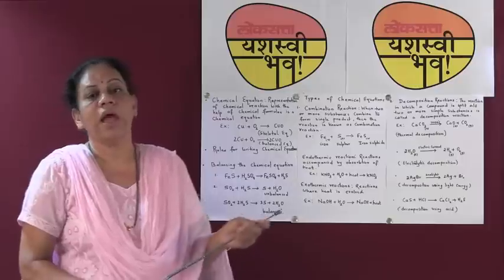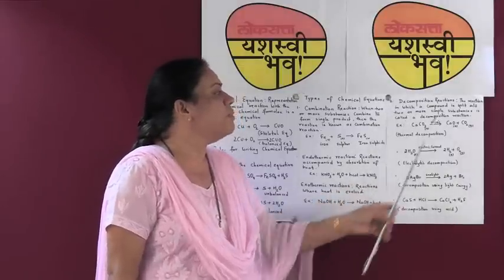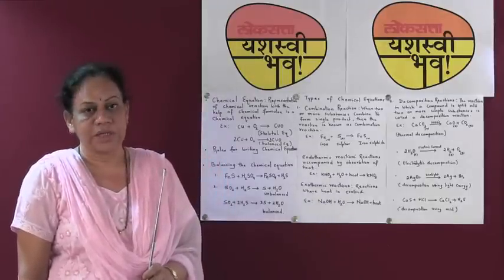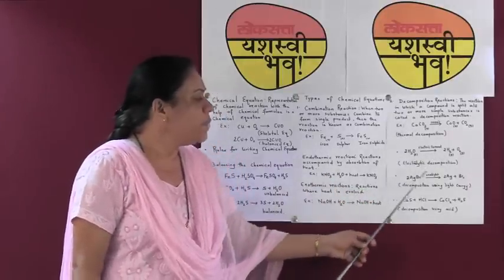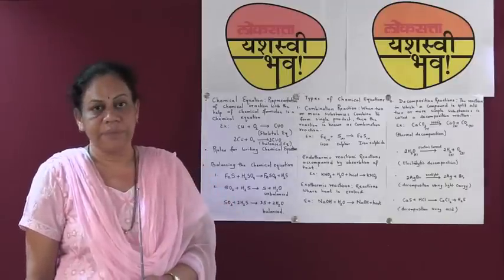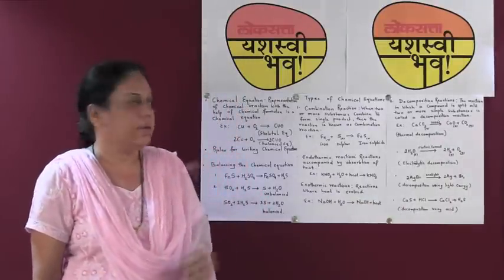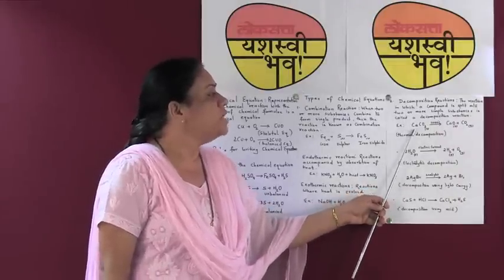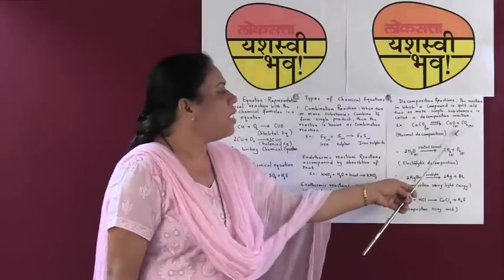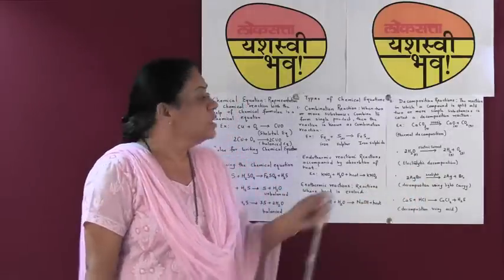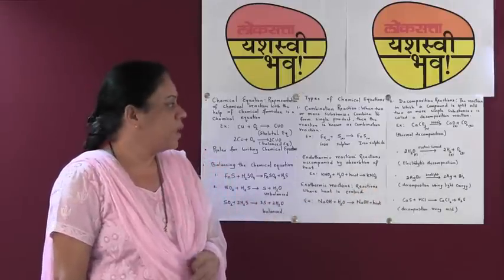Now let us understand the decomposition reaction. The reaction in which a compound is split into two or more simple substances is called a decomposition reaction. This decomposition may take place with the help of heat, by passing electric current, in the presence of sunlight, or by using an acid. For example, when calcium carbonate is heated to 1000 degrees Celsius, it splits to form calcium oxide and carbon dioxide gas — this is called a thermal decomposition reaction.